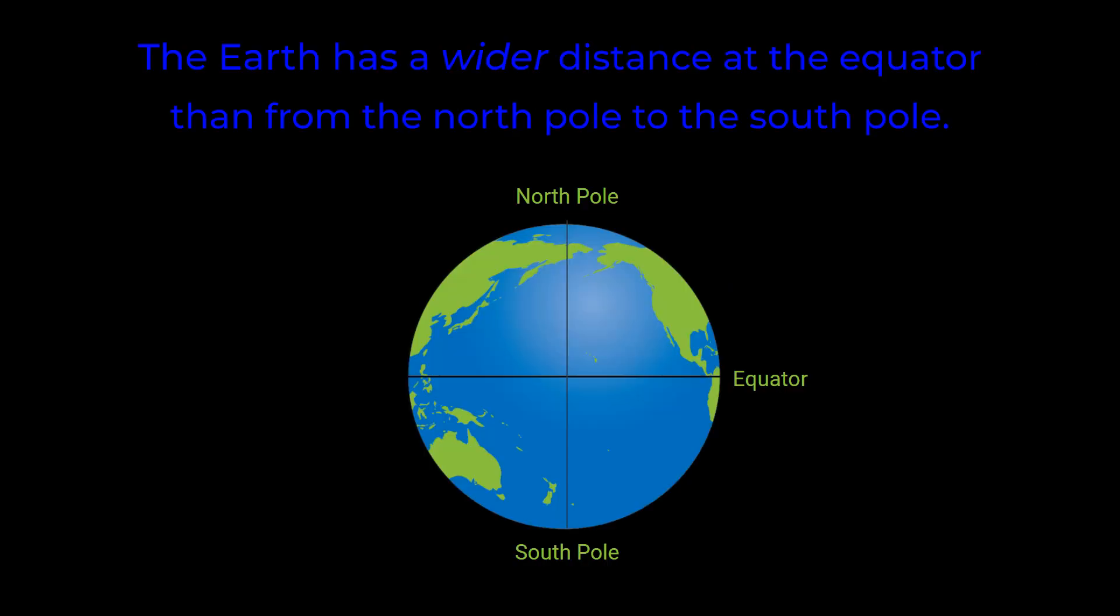The Earth has a wider distance at the equator than from the North Pole to the South Pole. Here's why.